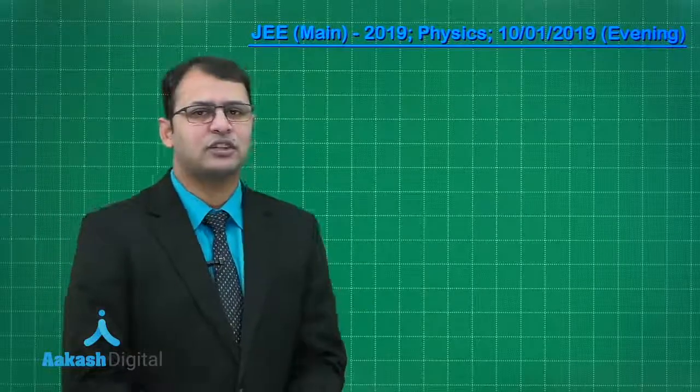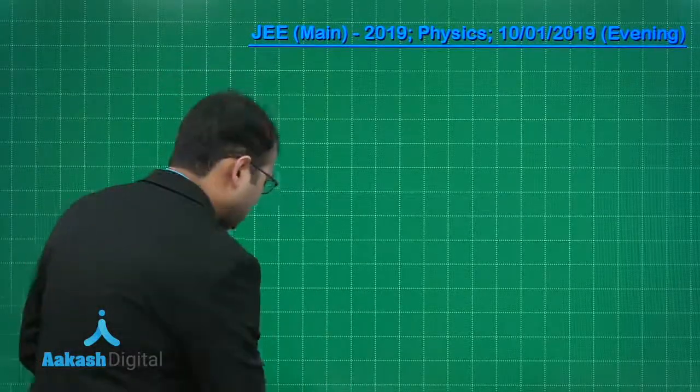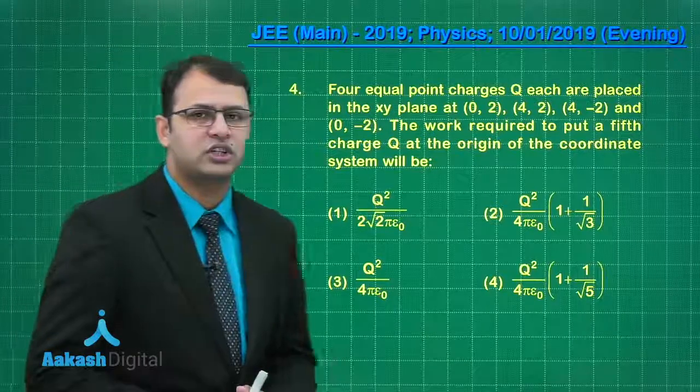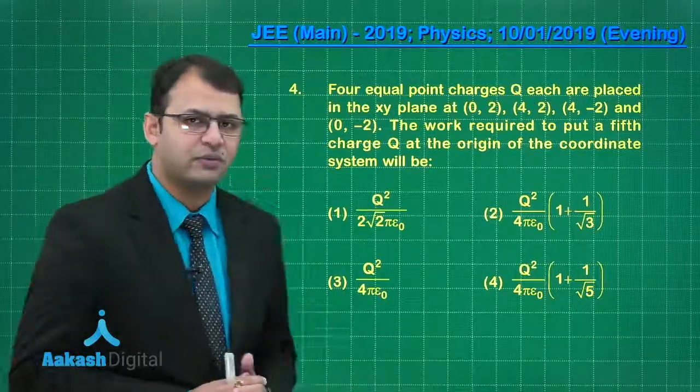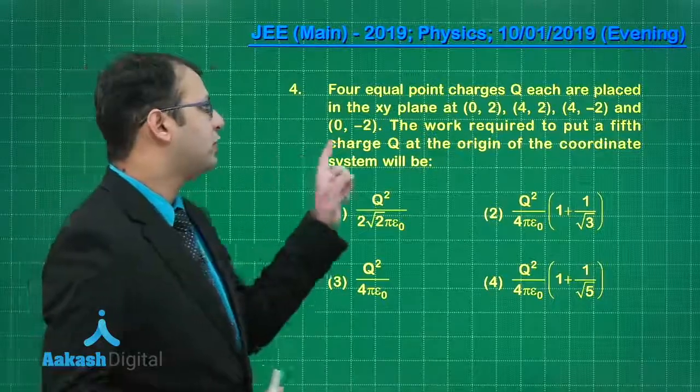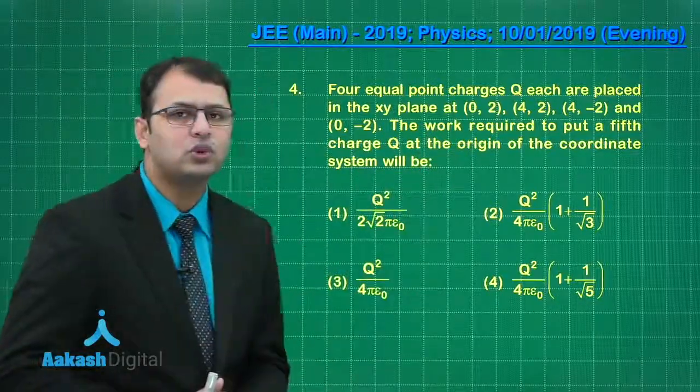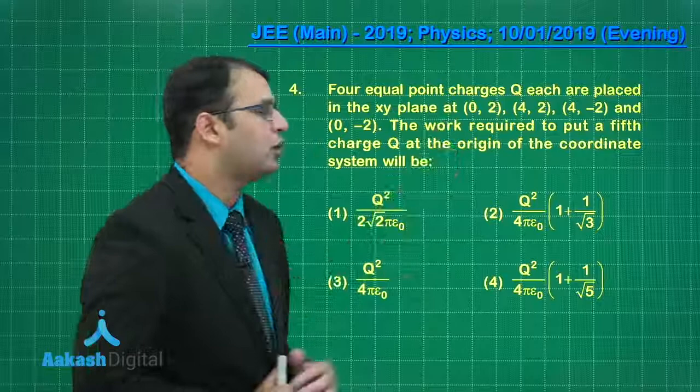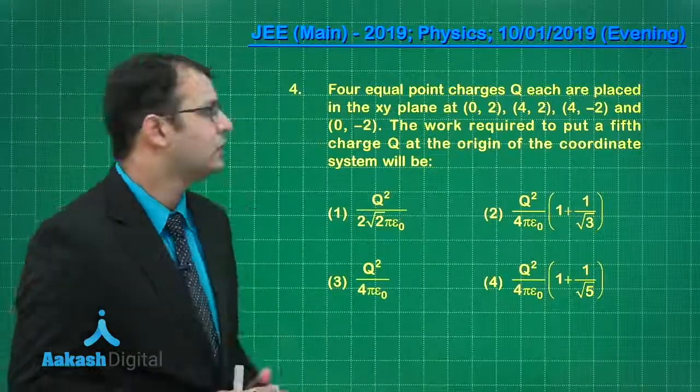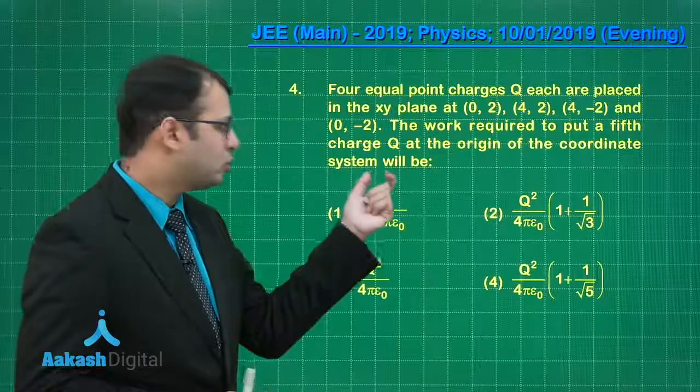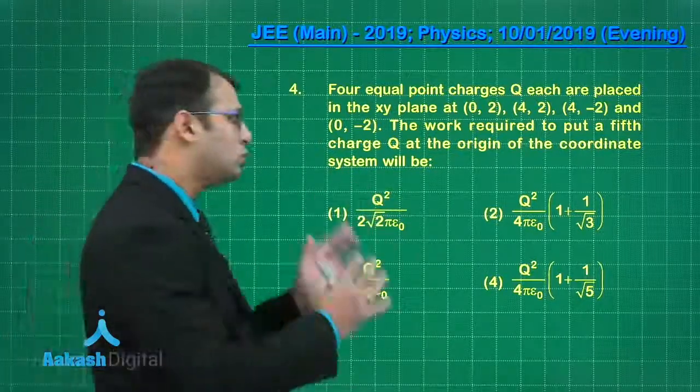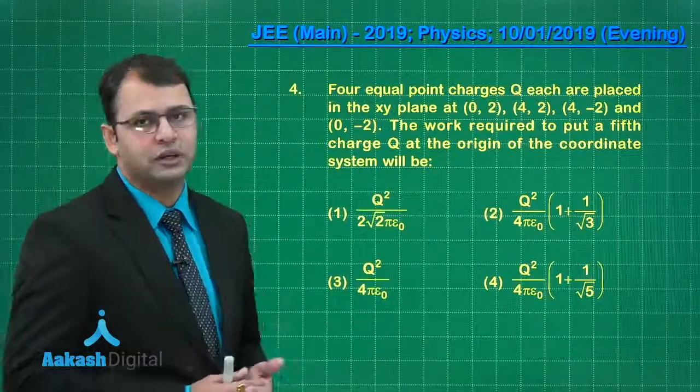Let's take our next question, that is question number 4. The question belongs to the section of electromagnetism, chapter capacitance and potential. There are four equal point charges capital Q each placed at the following coordinates on the XY plane, and the work required to put a fifth charge capital Q from infinity to the origin of that coordinate system would be.